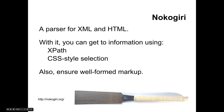Nokogiri is a parser for XML and HTML. You can use it to traverse HTML and XML documents to get access to information out of those documents. You can select that information using XPath, which is a W3C standard, and also CSS-style selection. If you're familiar with CSS, you'll know that the most specific markup wins and you can select elements using very specific markup.